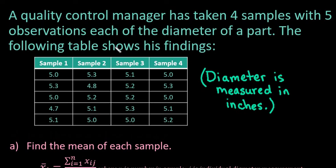Hi! For this video, I want to show you how to find an estimate for the mean and the standard deviation of a sampling distribution of sample means for a quality control situation. In this particular example, I am going to show you how to use the TI-84 to help you find all of those values.